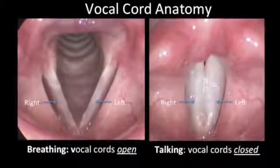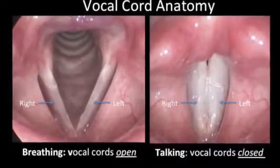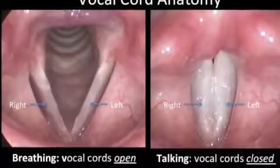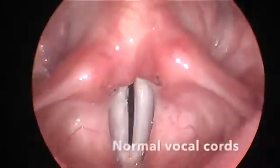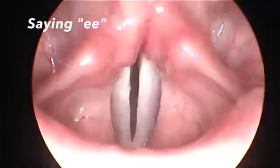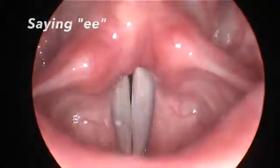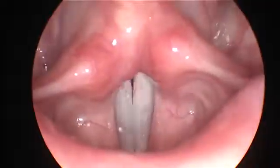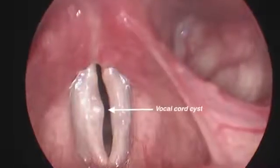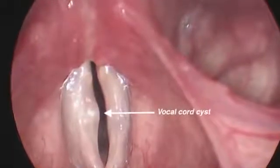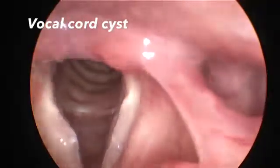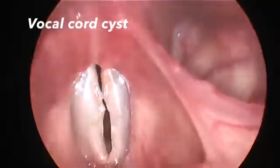Video stroboscopy has two features that really set it apart. First, it has a high-magnification, high-definition camera to provide us with an incredibly detailed view of the vocal cords. Second, it uses a specially designed strobe light that flashes in sync with your voice, allowing us to see a simulated slow-motion view of the actual vibration of your vocal cords. With this view, I can find subtle disturbances of the vocal cords that would be simply impossible to see with the naked eye or even with a standard flexible laryngoscope used by most general ENT doctors.